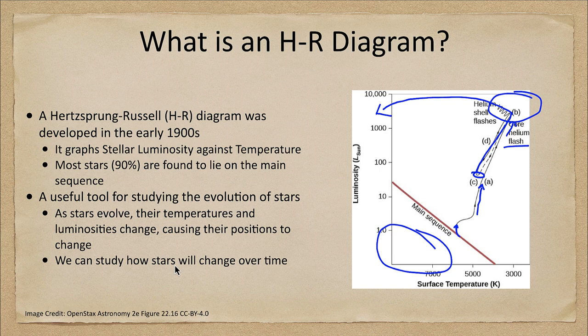Now, how do we compare models to what actually happens? We can look at clusters of stars. Star clusters show stars that all formed at the same time from the same material, and therefore we can see how they're evolving. All stars that are currently evolving are right around the same mass.